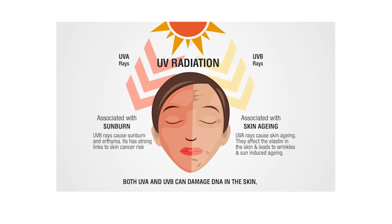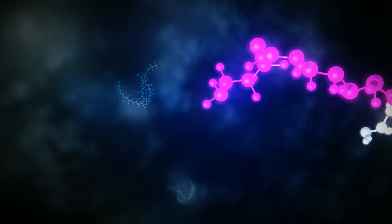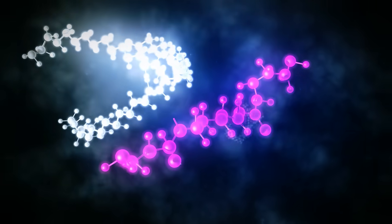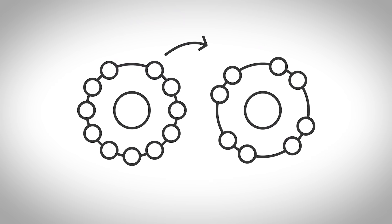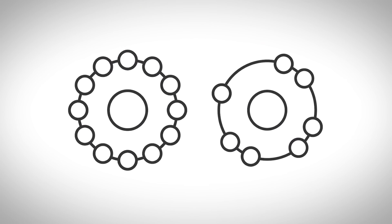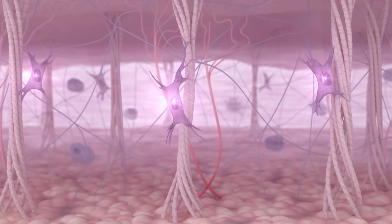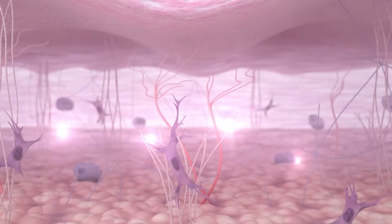UVA rays go deeper into the dermis, where they can generate free radicals — unstable molecules that bounce around like little pinballs and steal electrons from other molecules, which can damage those molecules. This in turn damages the collagen and elastin that are extremely important for the integrity of the dermis. These free radicals can also damage DNA. Over time, this breaks down the skin structure, leading to wrinkles and sagging.